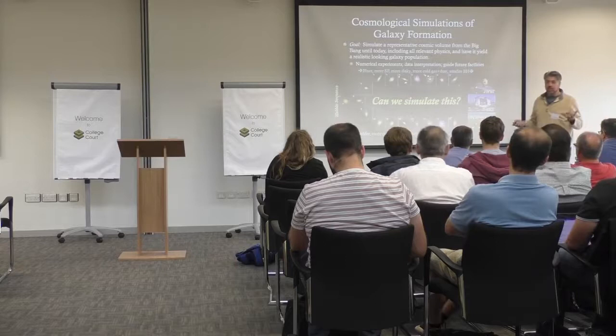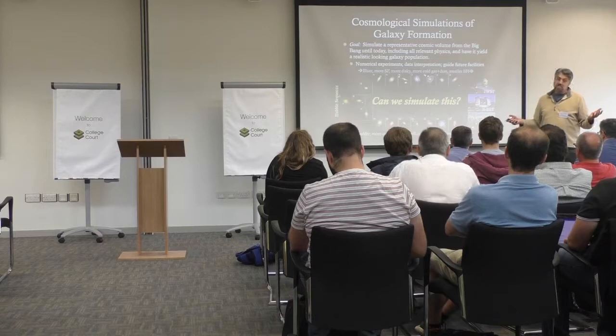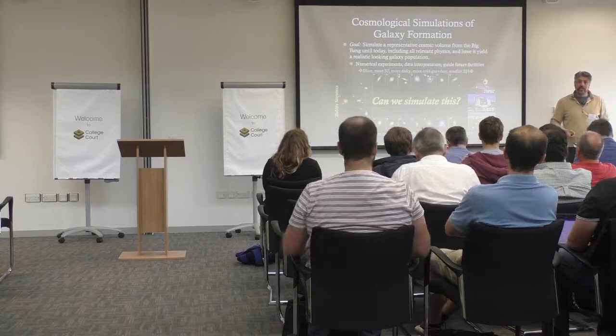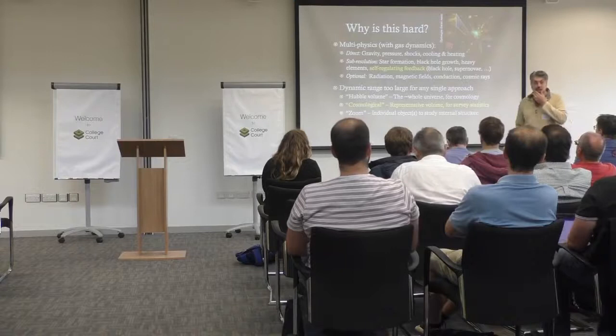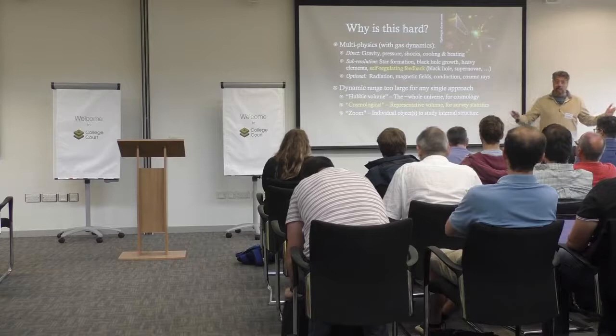But step one is: it doesn't help if you have a model that doesn't produce galaxies that look anything like a real universe — nobody's going to pay any attention. And unfortunately, until about five or seven years ago, that was pretty much the state of affairs. We essentially did not have simulations that could produce realistic galaxies. So why is that hard? There are two main problems: there's a huge range of physics, and there's also a huge range of scales that we have to consider.